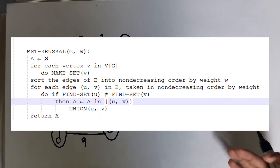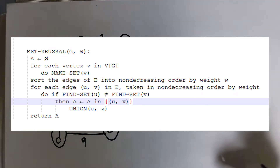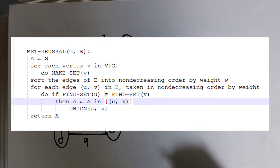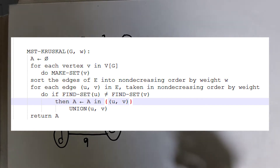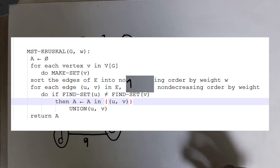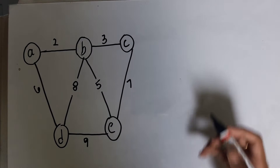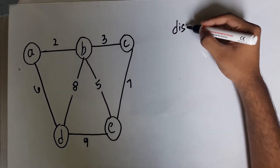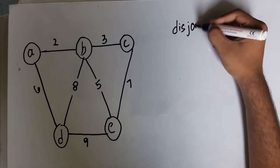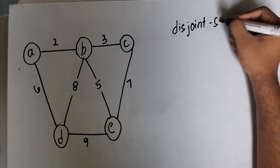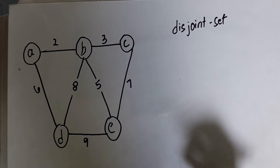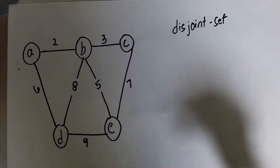This is the pseudocode of Kruskal's algorithm. Let's go step by step. Like Prim's algorithm, Kruskal's algorithm is also a greedy method. Kruskal's algorithm is based on a generic implementation of constructing a minimum spanning tree, and it uses a data structure called the disjoint set.